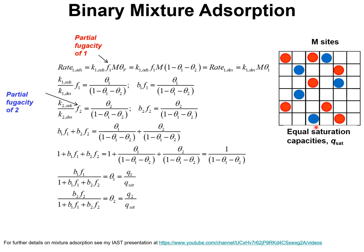By equating the rate of adsorption to the rate of desorption, we derive the expression: b1f1 equals theta1 divided by (1 minus theta1 minus theta2). Precisely analogously, we can write the expression for the rates of adsorption and desorption of component 2 and derive: b2f2 equals theta2 divided by (1 minus theta1 minus theta2). Adding these terms gives: 1 plus b1f1 plus b2f2 equals 1 divided by (1 minus theta1 minus theta2), which is the fractional vacancy.